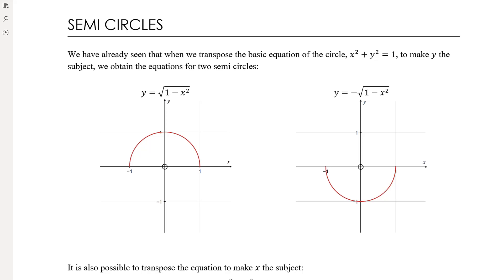In this video we want to extend what we talked about in the last video when we looked at graphs of circles. Today we want to look at graphs of semicircles. We already introduced the two most basic semicircles in the previous video. Transposing x² + y² = 1 to make y the subject, we get y = √(1-x²) — the top half — and y = -√(1-x²) — the bottom half. This is the most basic circle: center at the origin, radius of 1.